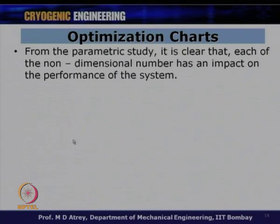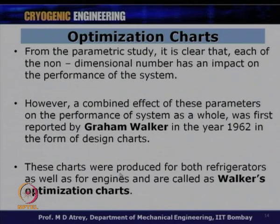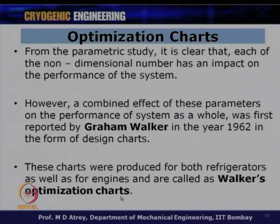A combined effect of all these parameters on system performance was first reported by Graham Walker in 1962 in the form of design charts. These charts were produced for both refrigerators and Stirling engines and are called Walker's design optimization charts. Walker extended Schmitt's analysis, optimized all parameters, and converted the results into design optimization charts. Using these charts, one can obtain cryocooler parameters for a specified cooling effect at a given cold temperature TE.